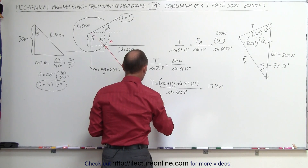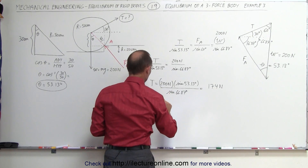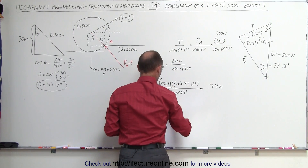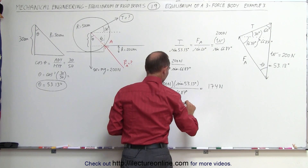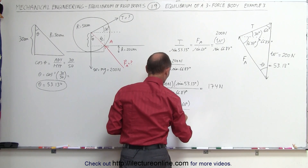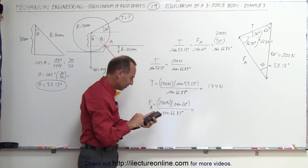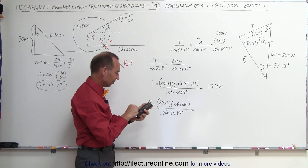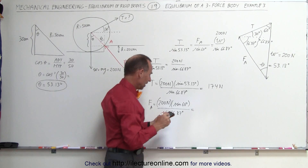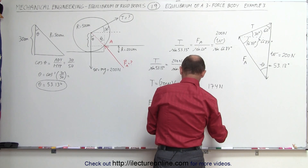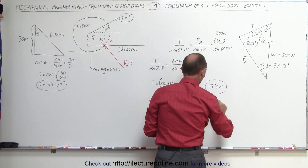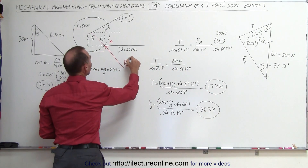Now doing the same for the action at A: F_A = 200 Newtons × sine(60°) / sine(66.87°). Calculating that gives us approximately 188.3 Newtons. So here's the tension of 174 N and here's the force at A of approximately 188.3 N. We found both unknowns.